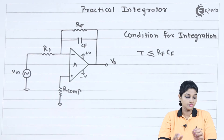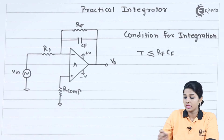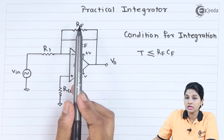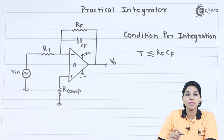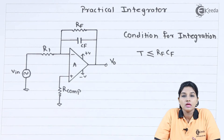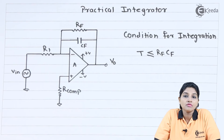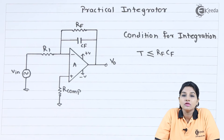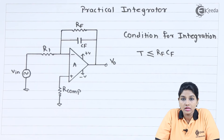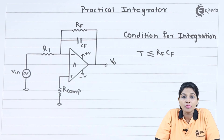So let's see the circuit first. The circuit of practical integrator shows RF connected in the feedback path along with capacitor CF, and R1 and R_comp are connected as before. In this circuit, as RF is included in parallel with the capacitor, the low frequency gain is no longer equal to infinity — it is now restricted to a value of minus RF by R1. As the value of RF is very high, the output equation of the practical integrator is the same as the basic integrator and it does not change the operation of the circuit.